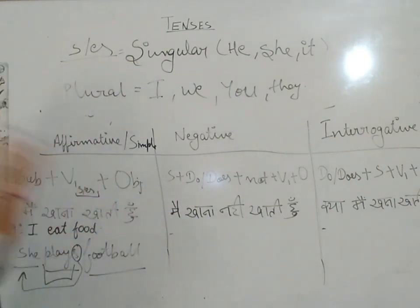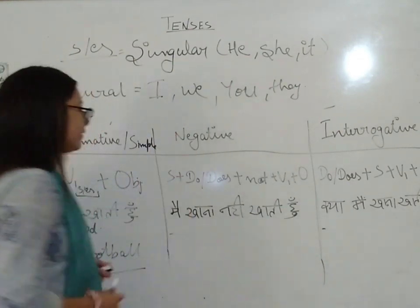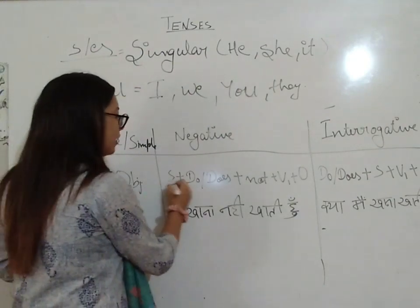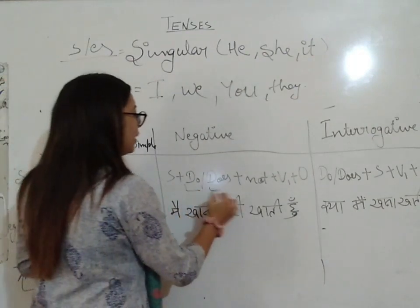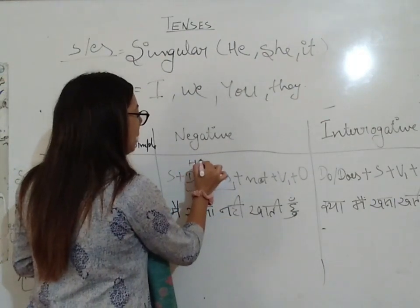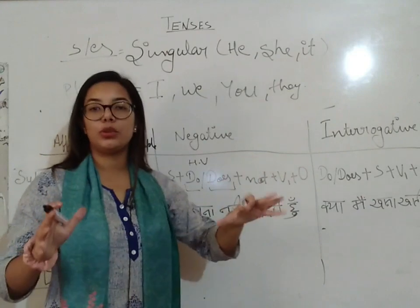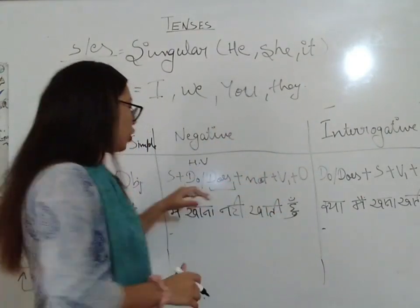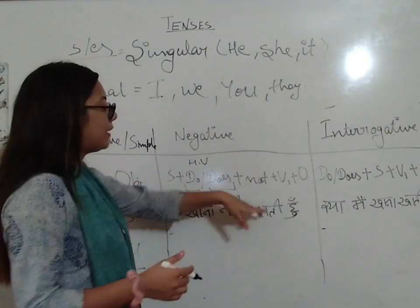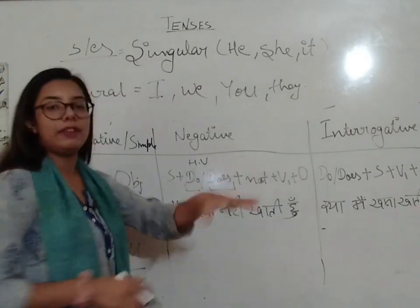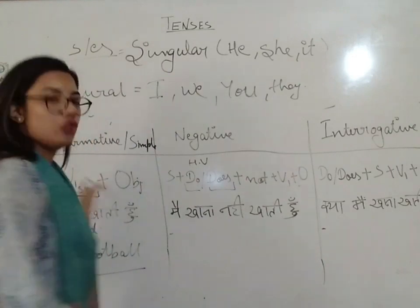Now for negative sentences. The formula is: Subject + do/does + not + Verb's first form + Object. The helping verb here is 'do' or 'does' — do with plural (I, we, you, they), does with singular (he, she, it). Example: 'I do not eat food.' For singular: 'She does not play football.' Note that when 'does' is used, we do not add S or ES to the verb — the S shifts to 'does.'